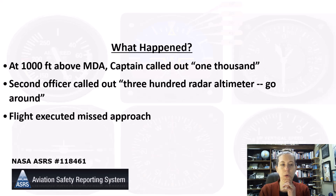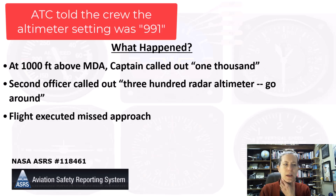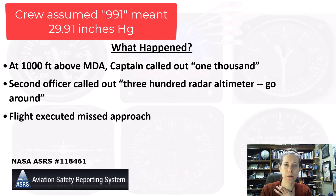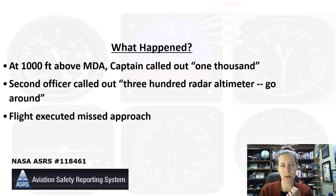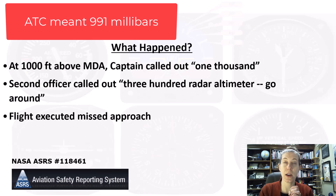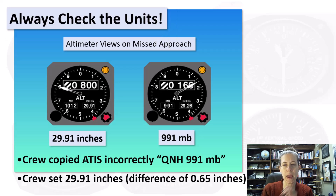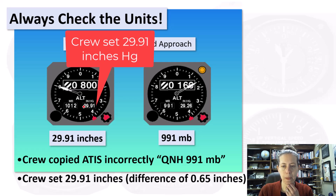When they dug into this further, the crew spoke to ATC about the altimeter setting. They thought it was given as 991 and assumed that meant 29.91 inches of mercury. But ATC had given them 991 in millibars.